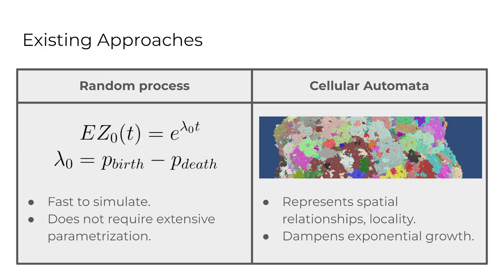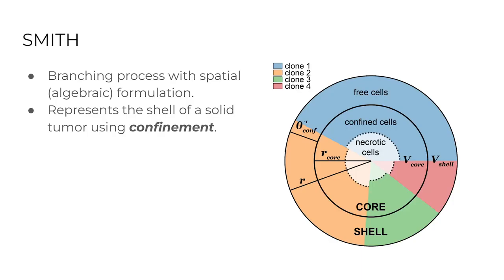These are both abstractions to a degree, and there are additional model types, but these two are typically used in the field. We aimed to address the shortcomings of both by creating a third category existing somewhere in between. We started with the branching process population model and added an algebraic formulation of spatial constraints, so that we can also capture biological phenomena that are normally only found in cellular automata-based models.